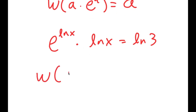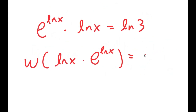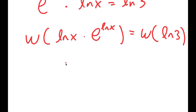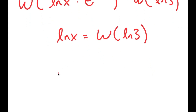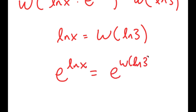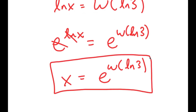So it's in the form ln x times e to the power of ln x is equal to ln 3. Now if I take the Lambert W function on both sides, I get W of ln x times e to the power of ln x equals W of ln 3. The left side simplifies to just ln x, so I'm left with ln x is equal to W of ln 3. I want to get rid of this ln, so I take e to the power of both sides. Since e to the power of ln cancel out, I get x is equal to e to the power of W of ln 3. So this is my answer.